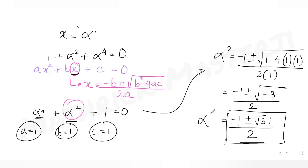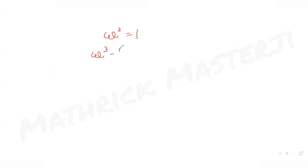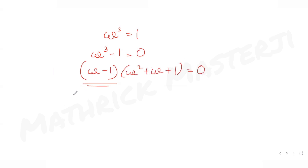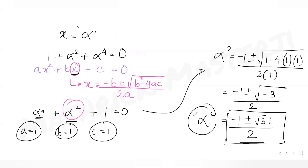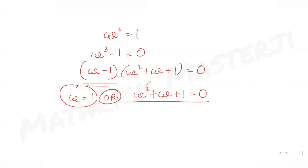These complex roots remind us of the complex cube root of unity, where ω³ = 1. From there, ω³ - 1 = 0, which factors as (ω - 1)(ω² + ω + 1) = 0, giving ω = 1 or ω² + ω + 1 = 0. Comparing this with our equation α⁴ + α² + 1 = 0, they are the same form.